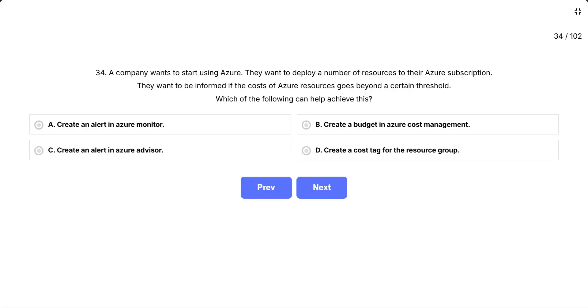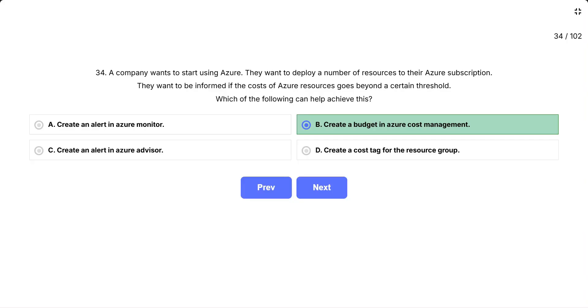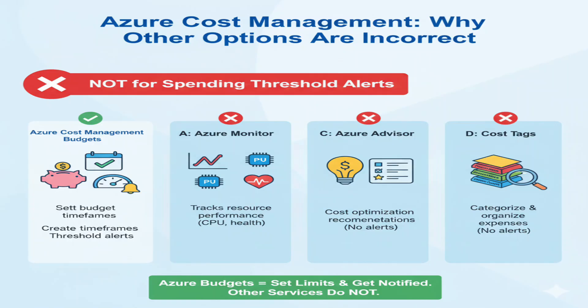The correct answer is: create a budget in Azure Cost Management. Azure Cost Management budgets are specifically designed for this purpose. You set a spending amount for a time period — monthly, quarterly, or yearly — then configure threshold alerts at different percentages, like 50%, 80%, or 100% of your budget. When your actual or forecasted costs hit these thresholds, you get email notifications within an hour. You can set up to five different thresholds and five email addresses per budget. Why the other options are incorrect: Option A, Azure Monitor alerts track resource performance metrics like CPU usage or storage, not billing costs. Option C, Azure Advisor gives cost optimization recommendations but doesn't send spending threshold alerts. Option D, cost tags help organize and categorize expenses for reporting, but they don't generate alerts when spending exceeds limits.